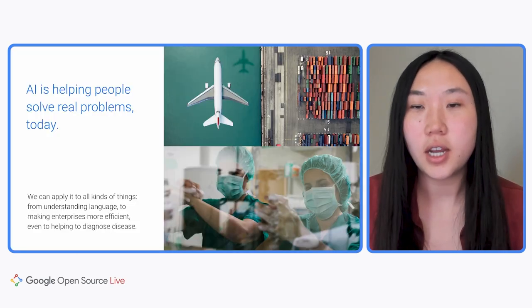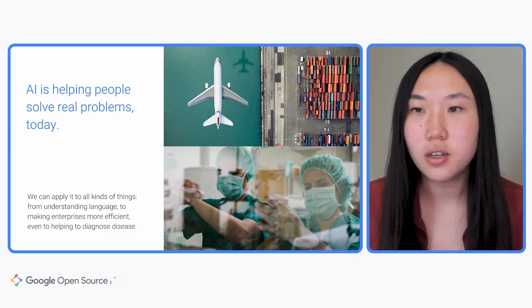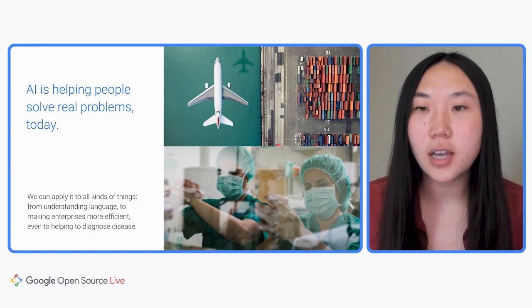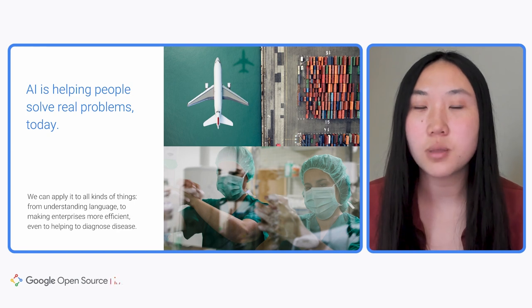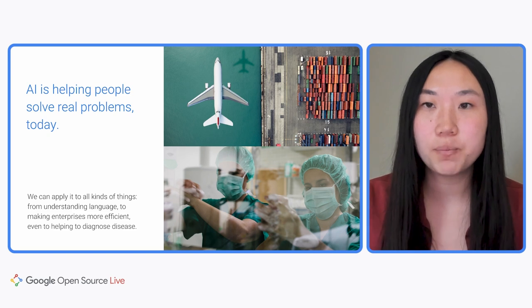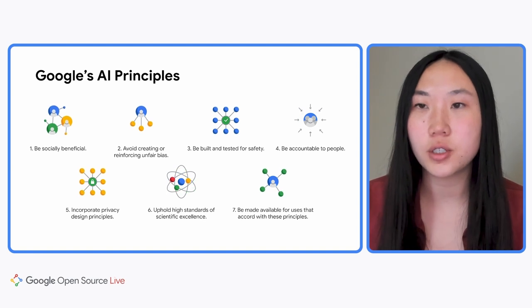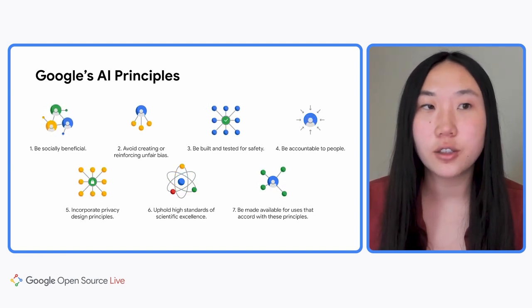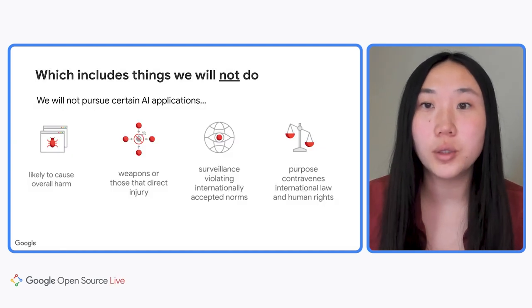AI is used today in many different applications and it's truly transforming the world that we live in. As creators of new products, it's staggering to see the range of new opportunities created by AI across many different sectors. However, for AI to be truly beneficial and useful, it needs to be built, tested, and operated responsibly. At Google, we have a set of principles that guide our approach to responsible AI. These include the seven listed here, as well as four applications of AI that Google will not pursue.